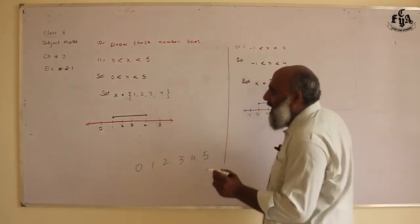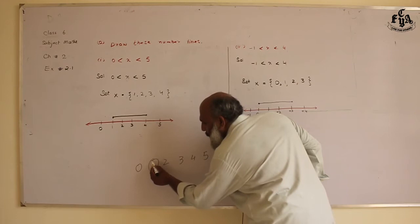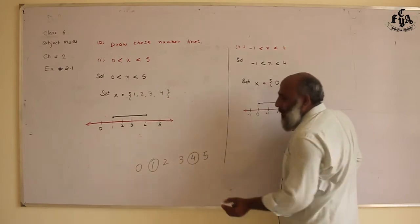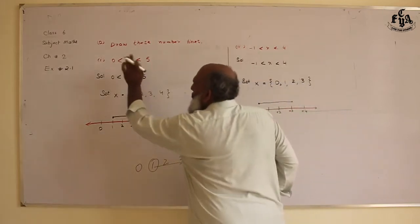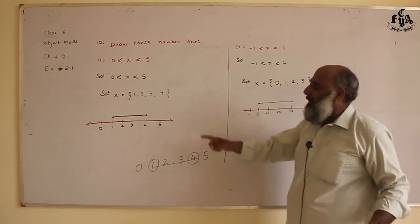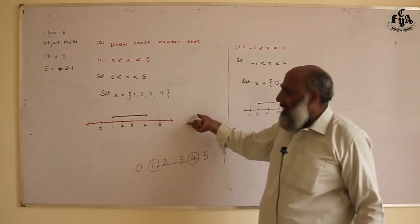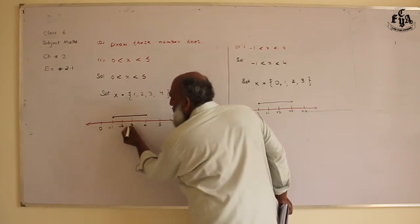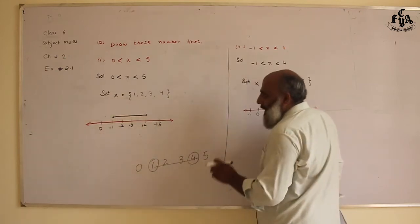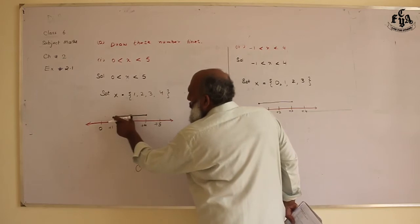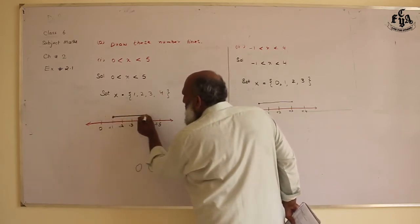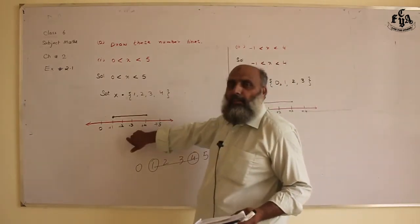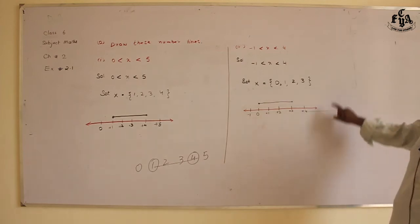Which numbers are greater than zero? These numbers are greater than zero. Which numbers are less than five? Four is less than five. So these numbers satisfy the statement. First draw the number line: zero, plus one, plus two, plus three, plus four, plus five. The answer is one to four. Place a dot at one and a dot at four, and connect both dots. This is how you show this question on the number line.